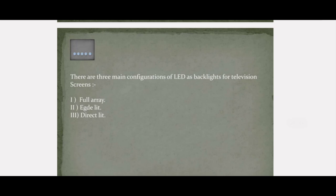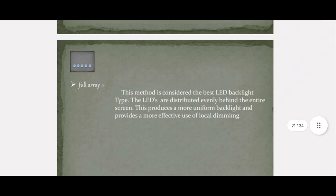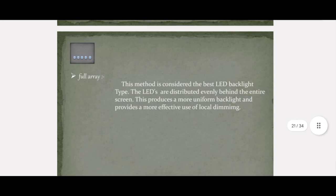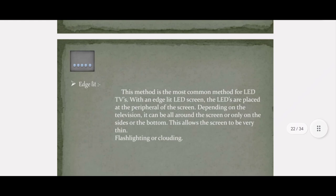LED has three main configurations for television screens: full array, edge light, and direct light. The first is full array LED — this is considered the best method. LEDs are distributed evenly behind the entire screen, producing a more uniform backlight and more effective local dimming. The next is edge light, the most commonly used configuration in televisions. With edge light LED screens, the LEDs are placed at the peripheral of the screen — either all around, only on the sides, or at the bottom — allowing the screen to be very thin.